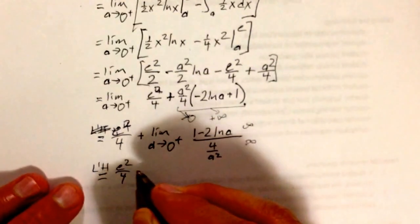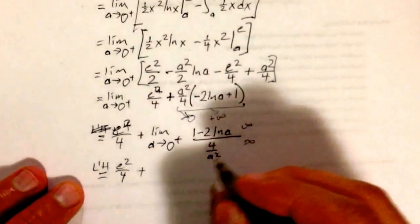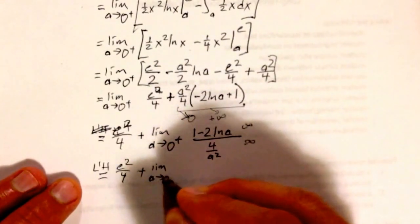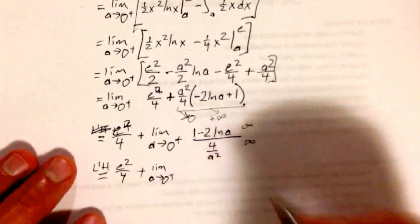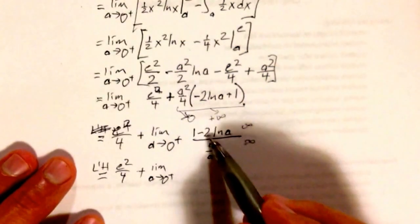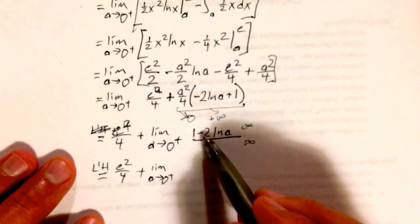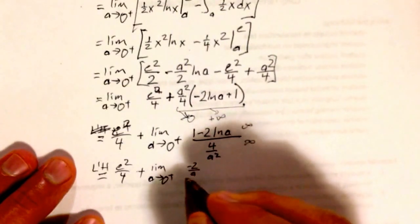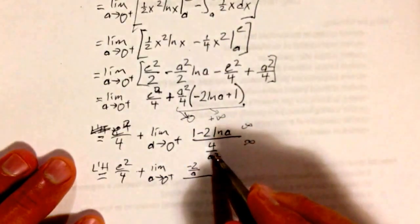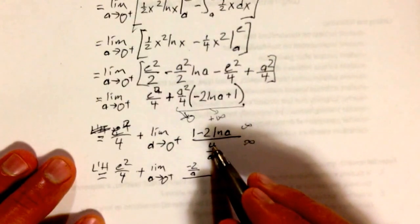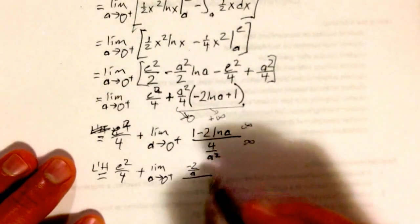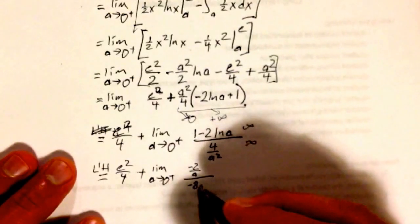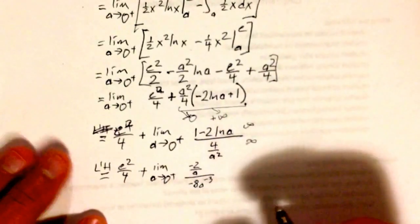e squared over 4 plus the derivative of the numerator. That has a constant derivative. This has a negative 2 over a, and then the derivative of the denominator. This is basically 4a to the negative 2, which gets me negative 8a to the negative 3.